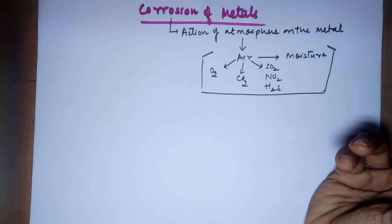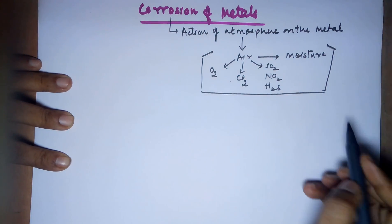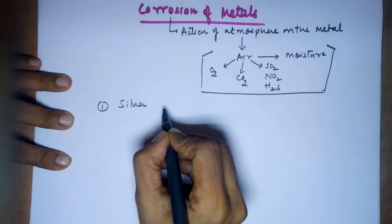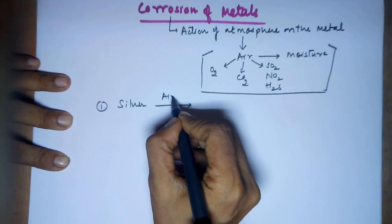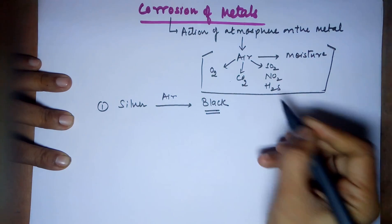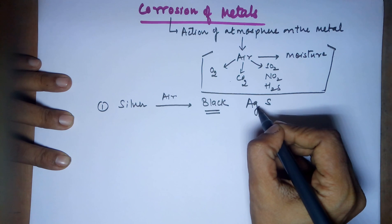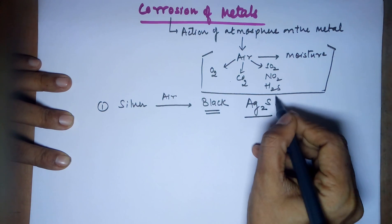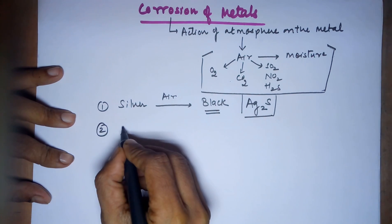Commonly affected corroded metals: firstly, if you have a silver article and leave it in the presence of air, it generally turns black. The compound formed is silver sulfide. Silver has a valency of one and sulfur has a valency of two, so the formula would be Ag₂S.